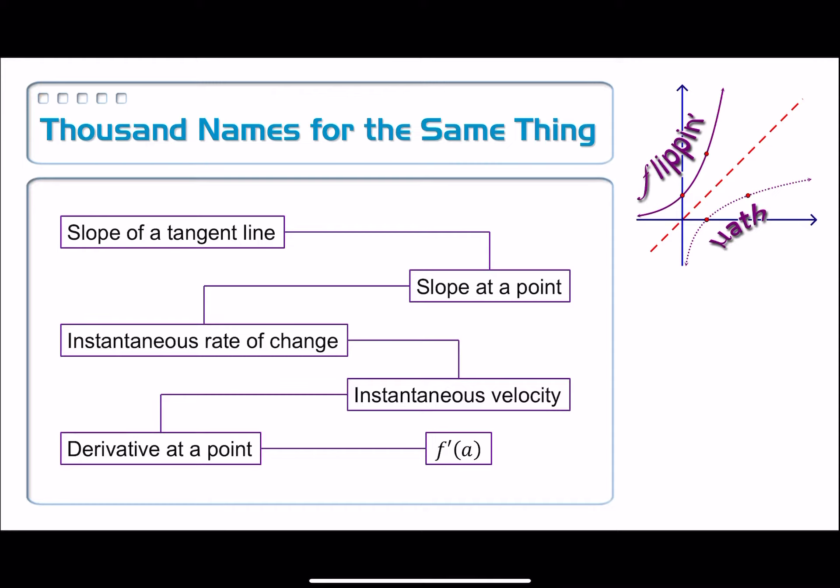In terms of physics, it means it's the instantaneous velocity, what we were just doing in the previous example. And what we are about to see, there's another name for it, and it is finding the derivative at a point on that function. And it has a new notation, and it has a little prime mark. And I read that f prime of a. It means find the derivative at a. It means to find the instantaneous velocity at time t equals a. Find the instantaneous rate of change at a. It means to find the slope at a, the slope of the tangent line.